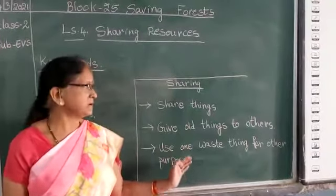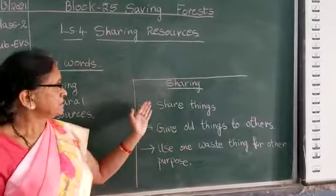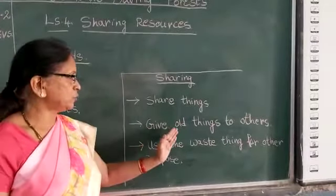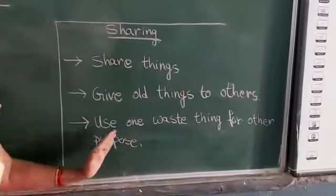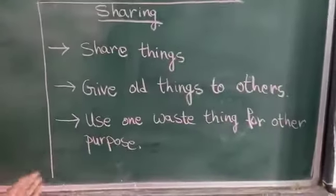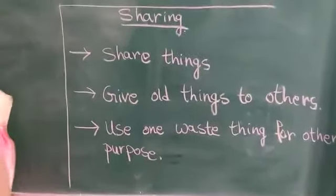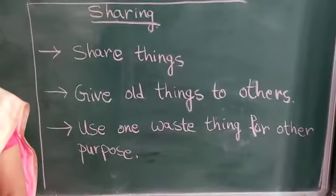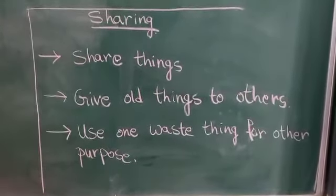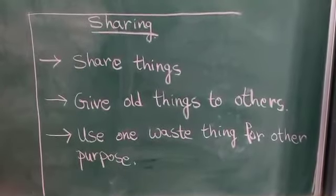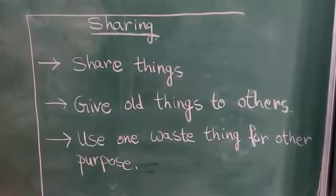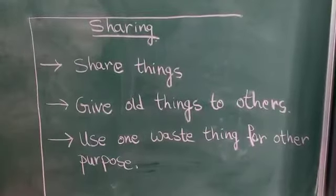Here I wrote some important points — look at that. Sharing: first, sharing things. Next, give a message — share old things with others. Third, use one waste thing for another purpose. So sharing things. For example, we get paper from the bamboo plant. When we finish writing in a notebook, if anybody wants it, we have to share that notebook.